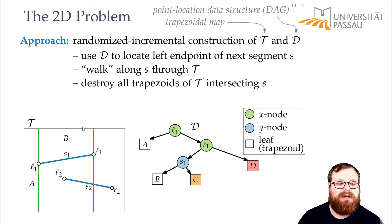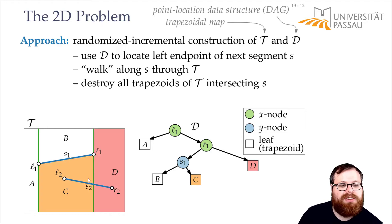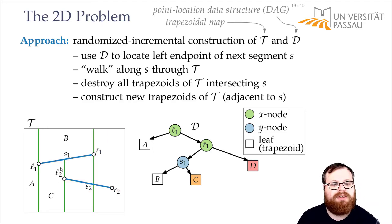And how do we rebuild them? We have our new endpoints, L2 and R2. So we have to shoot our rays up and downwards. And that gives us here, instead of just one trapezoid, three trapezoids. One to the left, which is C, and one to the right here, which is D.